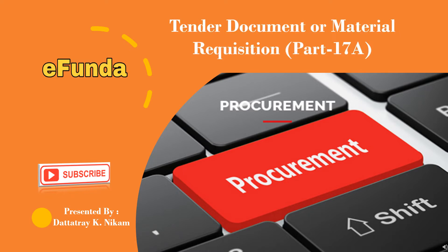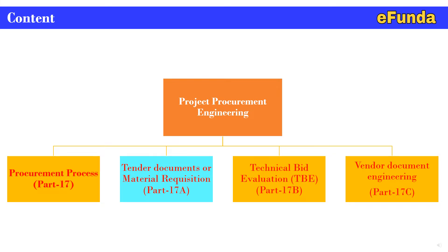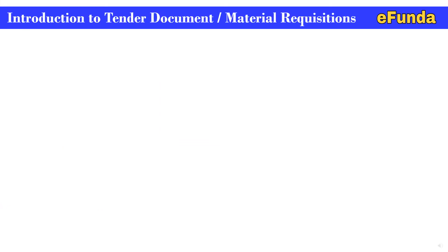Let's begin with our today's topic: tender document or material requisition, Part 17. In project procurement engineering, this is being presented in parts. Procurement process Part 17 was already published. Tender document or material requisition Part 17a is this video. Technical bid evaluation (TBE) is Part 17b — the next video. Vendor document engineering is Part 17c — the last video of this series.